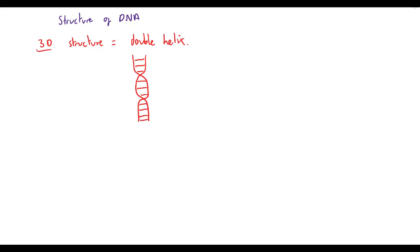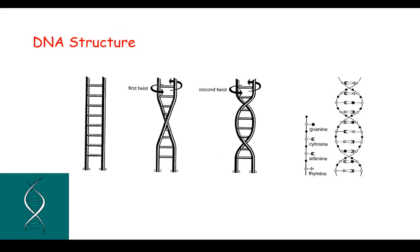Each separate strand is joined together by bases. Its 3D structure is known as a double helix, which is basically like a ladder which has two twists in it. So here we have a ladder, then we have a first twist, then we have a second twist, and that's the 3D structure, the double helix.